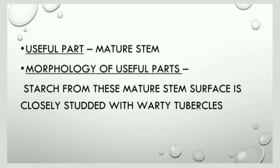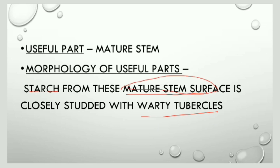Now let us discuss about the useful part. The useful part of the plant is the mature stem. The morphology of the mature stem is that the surface of the mature stem is closely studded with warty tubercles — that is, warty tubercles are present on the mature stem surface.